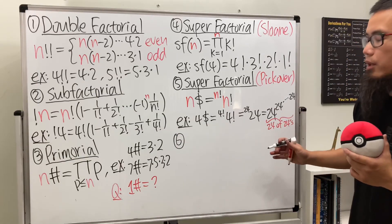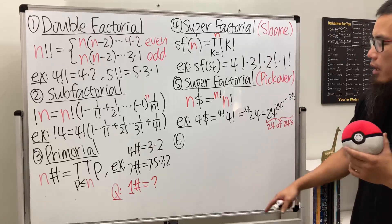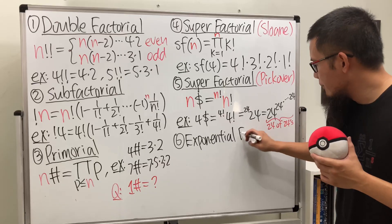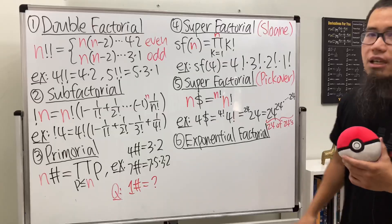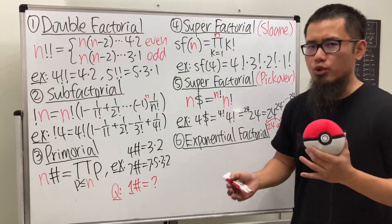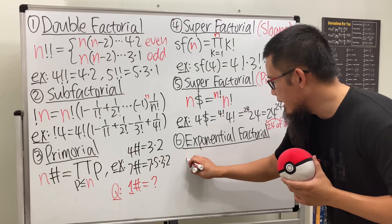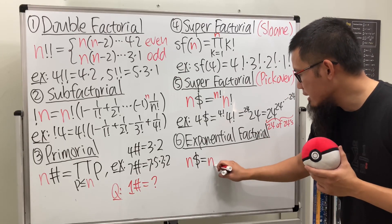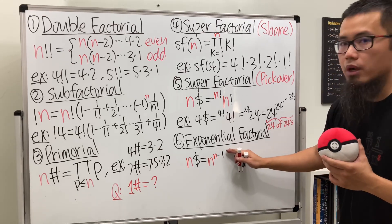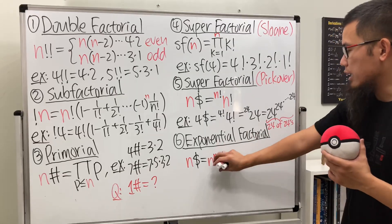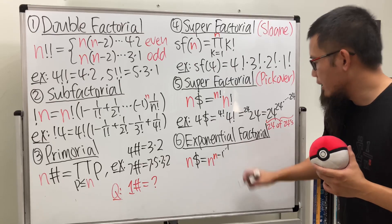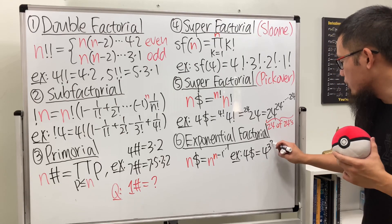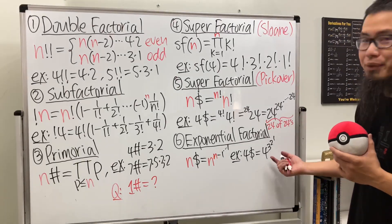Number six is the exponential factorial, and unfortunately the notation is the same dollar sign as Pickover's super factorial, so you have to pay attention to which definition is being used. For the exponential factorial, you start with n and raise it to the n minus one power, then to the n minus two power, and so on down to one. For example, four dollar sign means four to the third power, to the second power, to the first power — four, three, two, one.